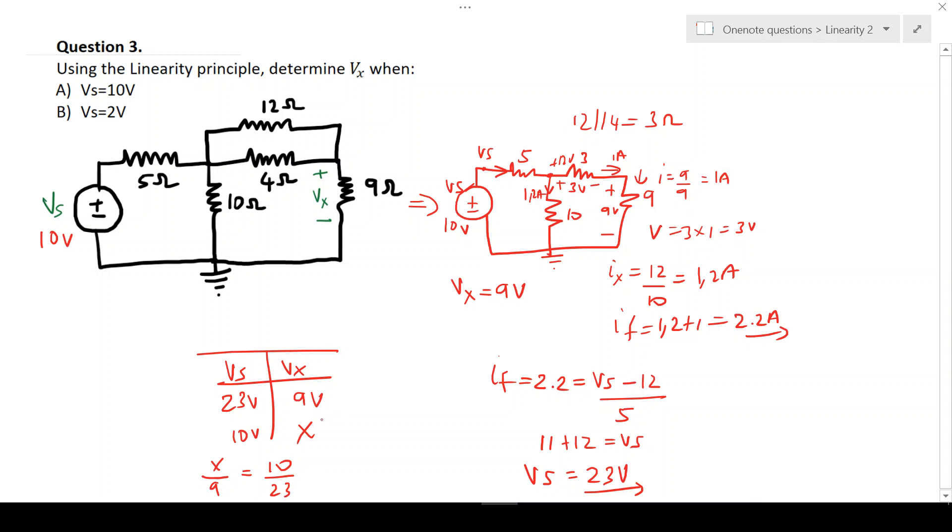And I calculate the value of X, and the value of X will be 10 times 9 divided by 23. So I get a value of X equals 3.91, which tells me that Vx will give me 3.91 volts.